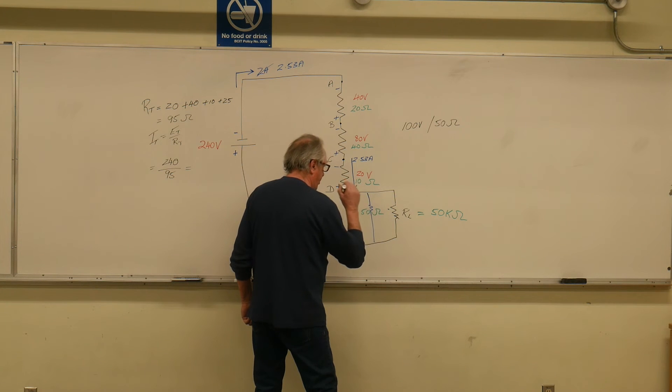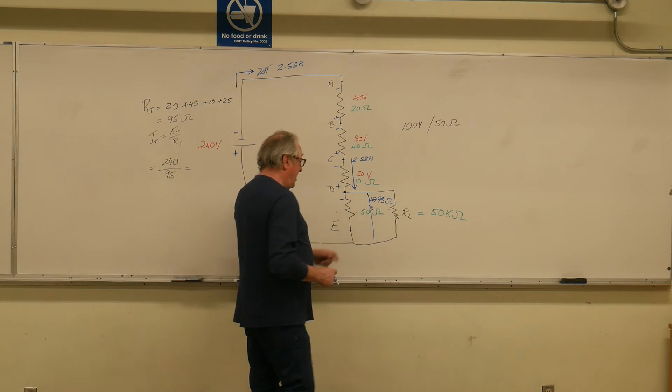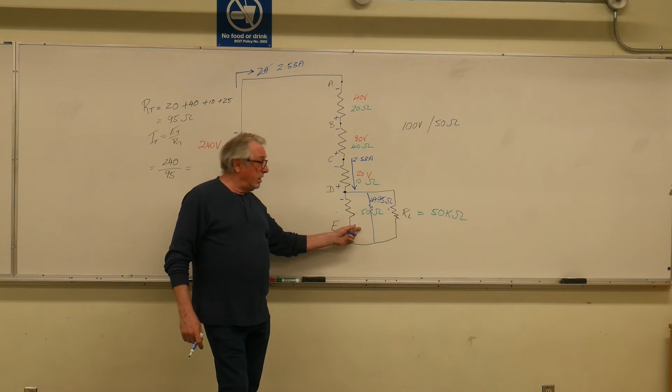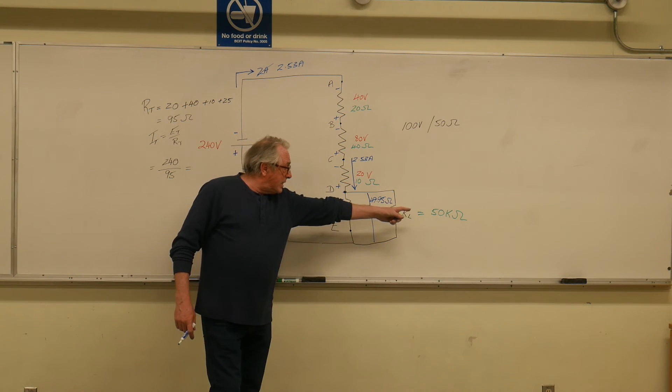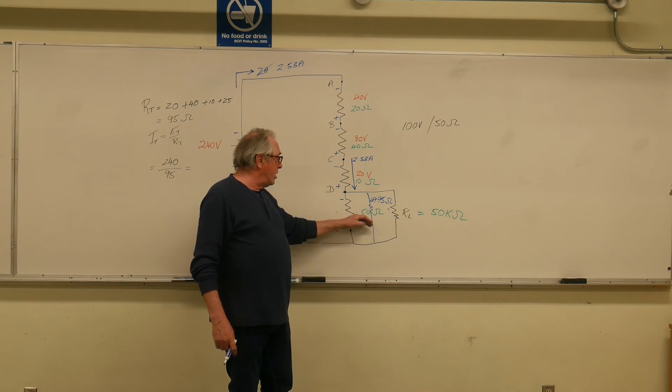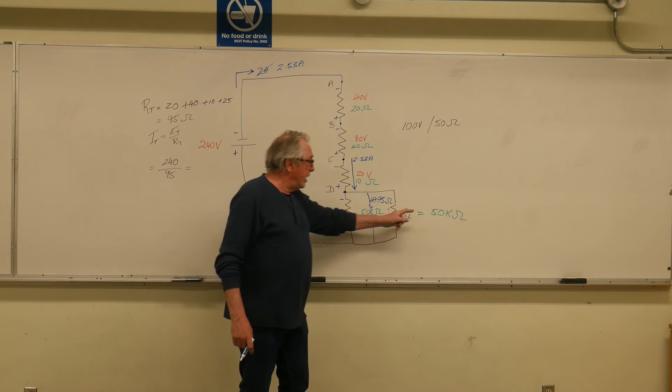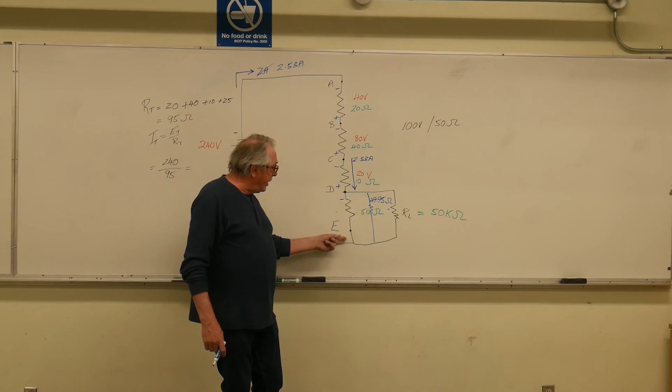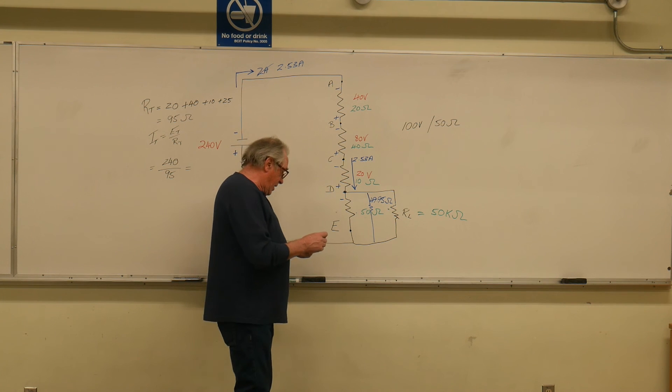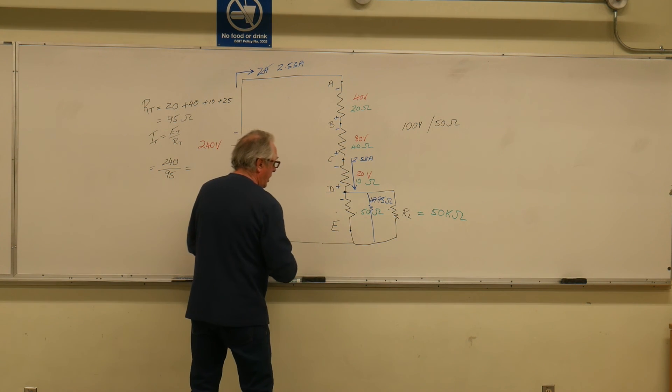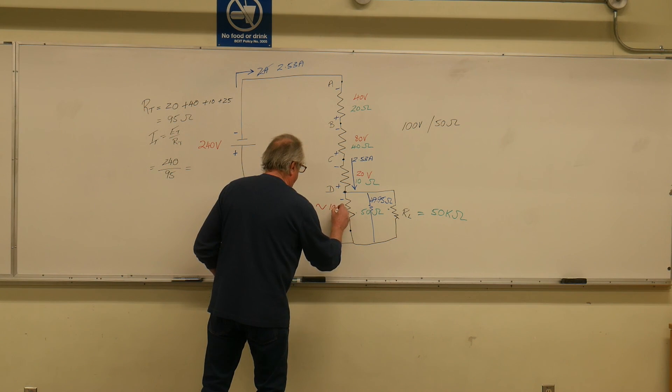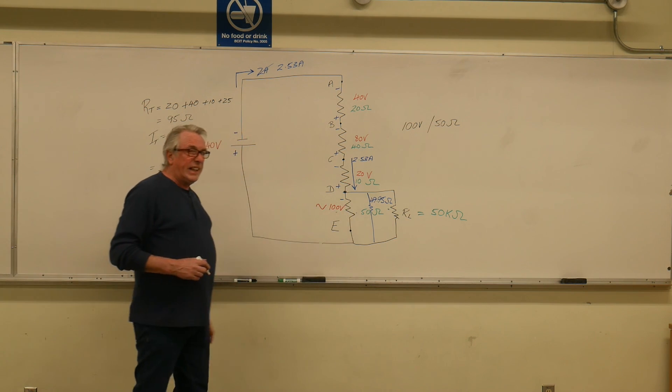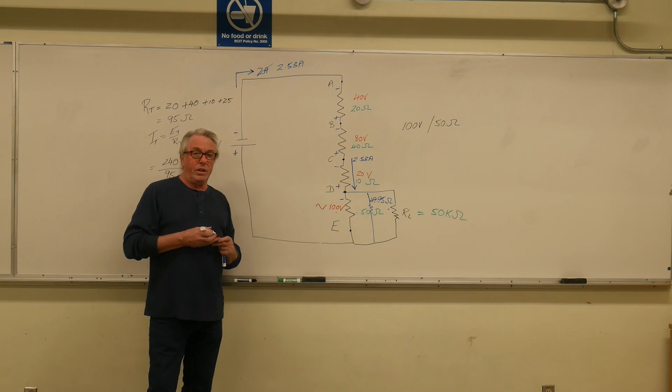That's very close to the original, isn't it? It's very close because this is a lot larger than this that I put it in parallel with, so this draws very little current. Most of the current still goes through here, so I would have very close, very close to, I would have approximately 100 volts across here, not exactly but very close. There you go, that's how you'd use a loaded voltage divider.